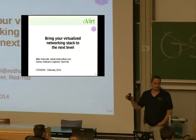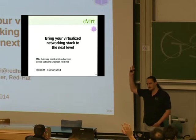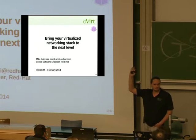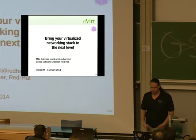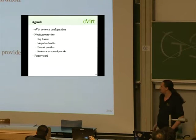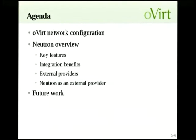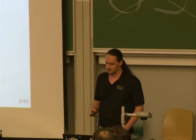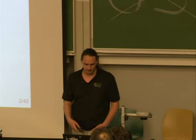If you know Neutron, raise your hand — OpenStack Neutron. So basically, let's see what we're going to talk about: oVirt network configuration — how do we configure networks today in the oVirt project. oVirt is like an open source alternative to vSphere and vCenter. Then we go over Neutron, see what it has to offer, what we're looking to do with it, and some future work that we have planned.